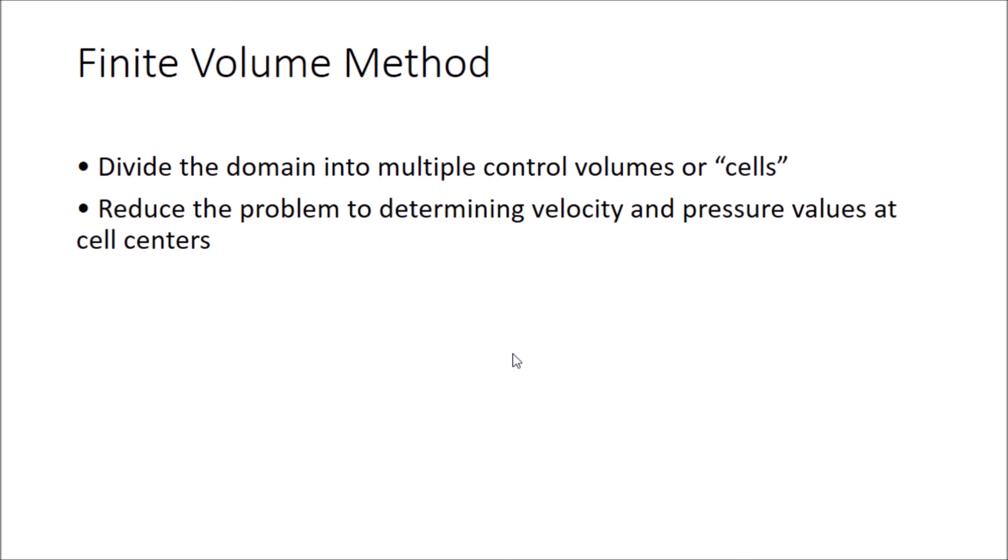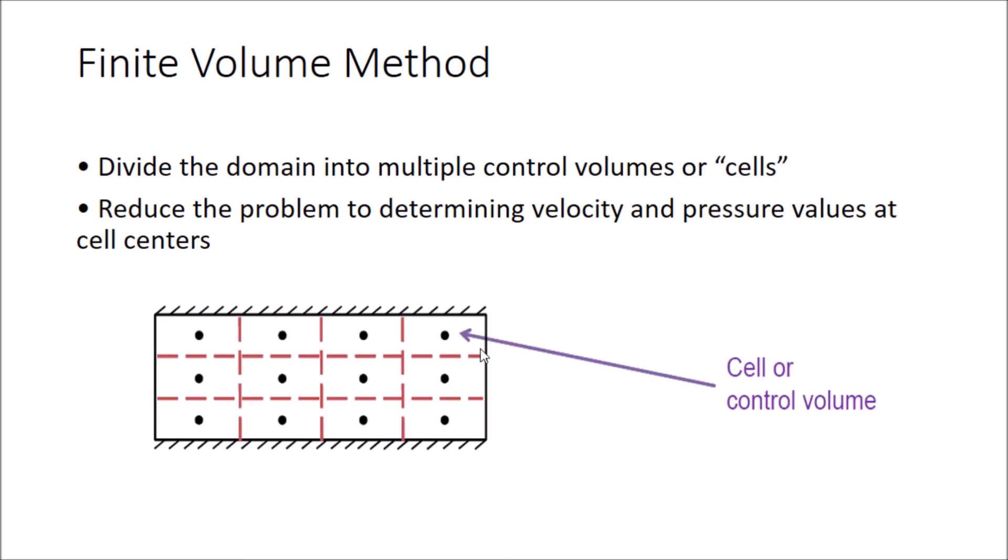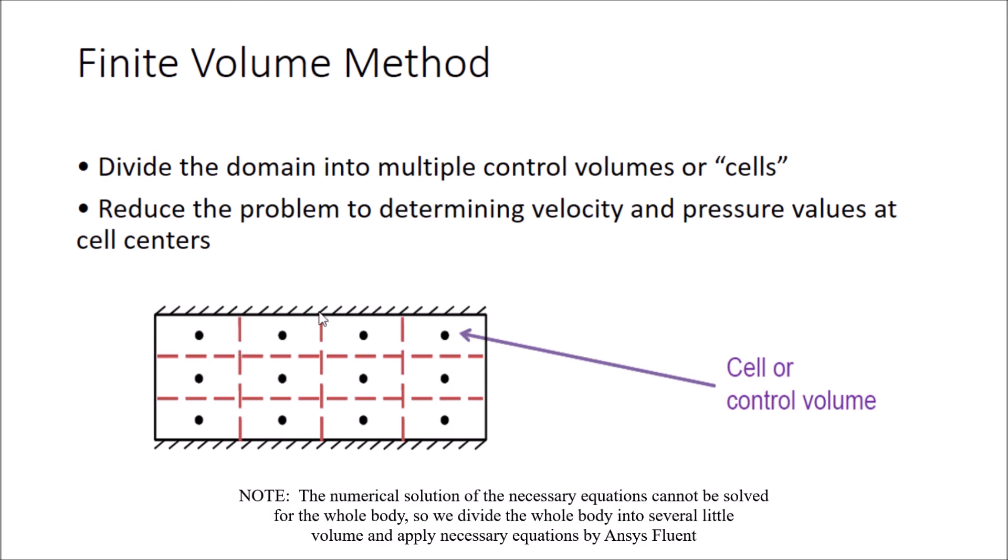Let me give an example. Fluent will apply the conservation law using integral form in each and every cell. I have already told you before that this is a cross section of a pipe and we divided this pipe into several portions—you can call it a cell. For each cell, we have integral equations.